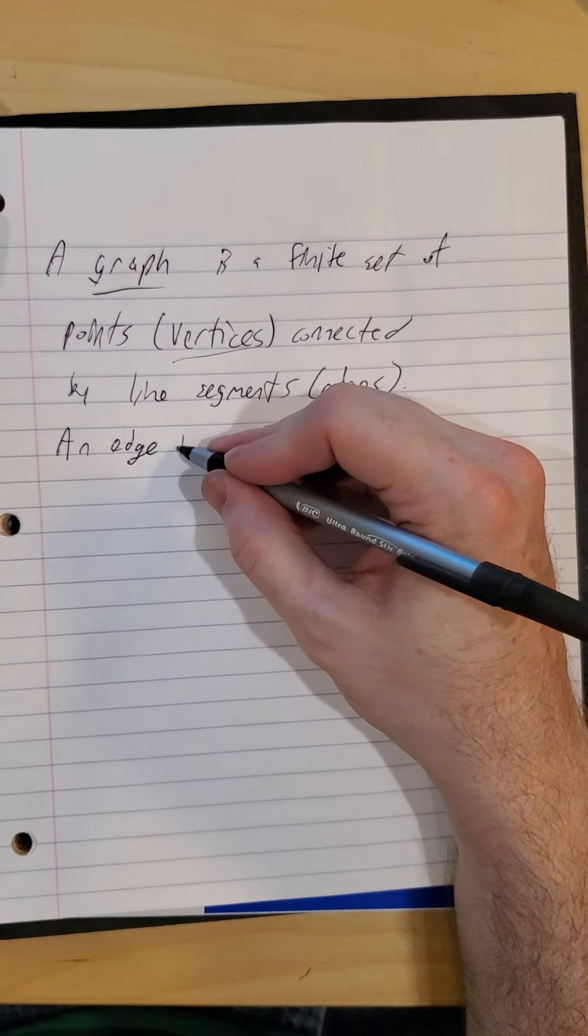So notice to identify an edge, we just use the names of the adjacent vertices, which vertices are being connected. But for example, B, D is not an edge. I don't have a single line segment connecting B and D. E, E is an edge because it connects a vertex to, it happens to be the same vertex, but we are able to use that edge and get to a vertex.